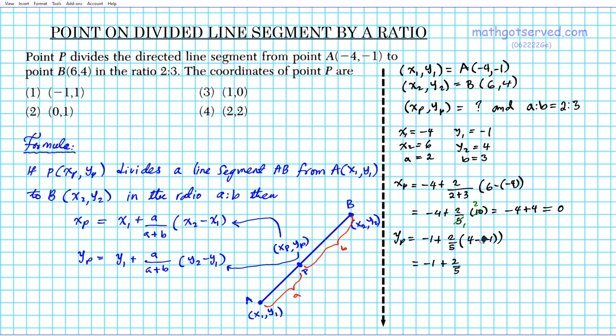4 minus -1 is 4 plus 1, which is 5. So you see you're splitting the rise. The rise is 5, using that ratio 2 to 5. If you split the rise of 5 in the ratio 2 to 5, that's going to give you 2. And you just add it to the Y coordinate. So you're going to have -1 plus 2, because these fives divide out to unity. -1 plus 2 is just 1.